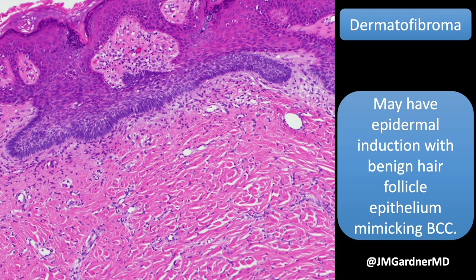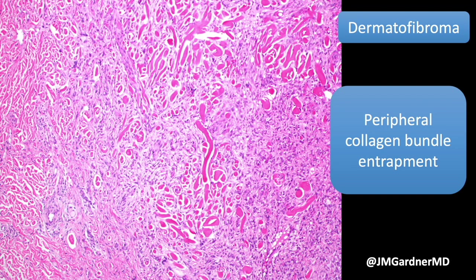Sometimes the DF underneath the hyperplasia or induction can be very subtle — just small spindle or crescent-shaped cells wrapping around sclerotic collagen bundles. On a thin shave biopsy it's easy to overlook these subtle sclerotic or atrophic forms of dermatofibroma. Here's the beautiful collagen entrapment at the edge, with thick, almost keloidal collagen bundles wrapped around by the spindle cells.